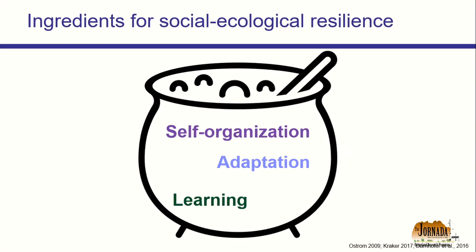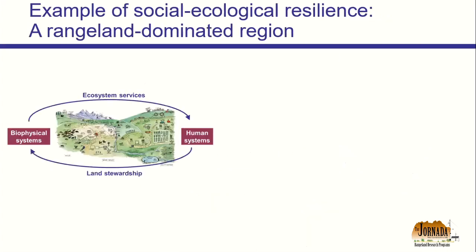Some key ingredients for social ecological resilience are self-organization — groups coming together to talk, learn, and manage a system that they care about, kind of like we're doing here today. Another key ingredient is adaptation, and finally learning. Let's run through a concrete example because resilience can be a little hard to wrap our minds around without one.